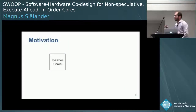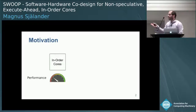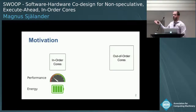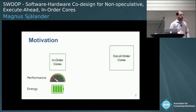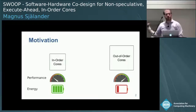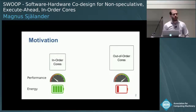In-order cores have limited performance, but they tend to be very energy efficient. On the other hand, out-of-order cores use a lot more hardware resources to improve their performance, but in doing so, they also have not as good energy efficiency.